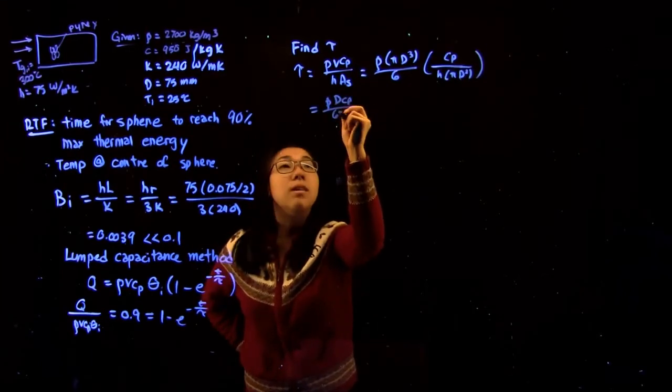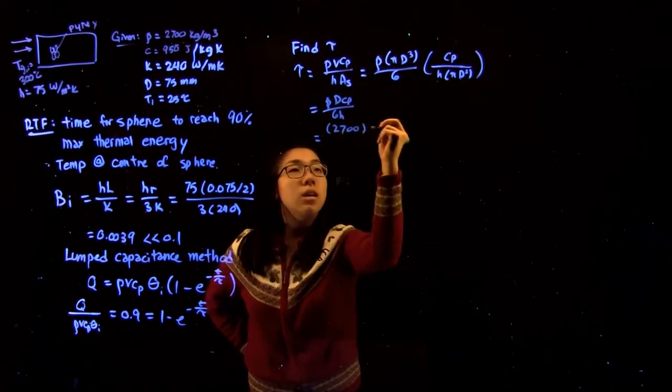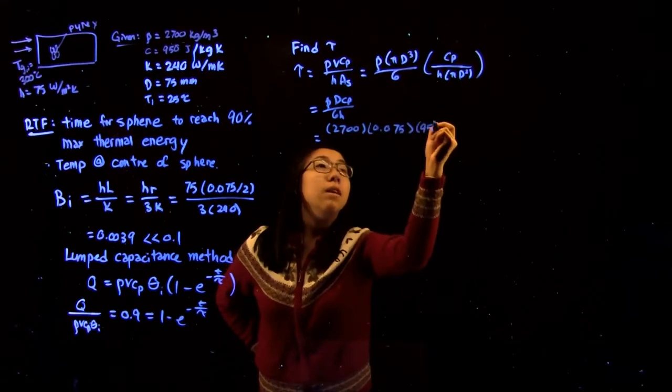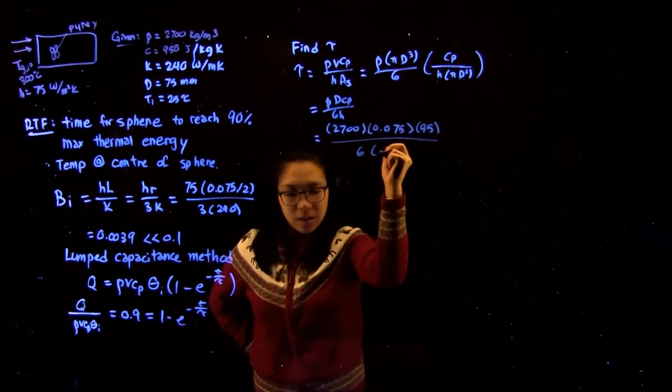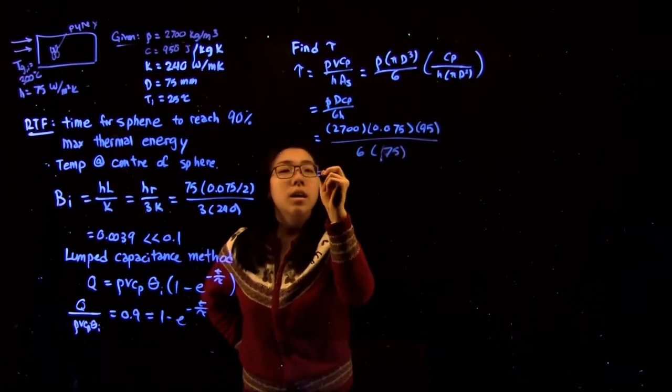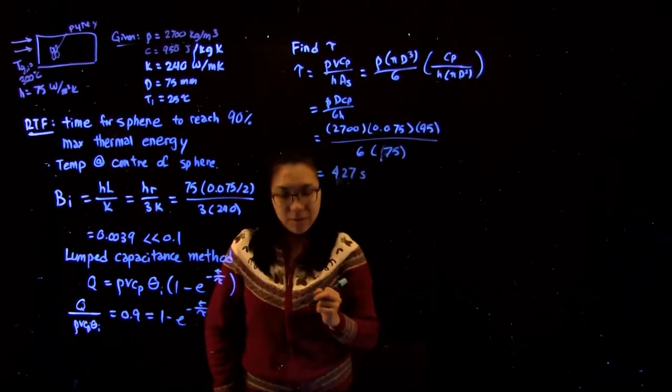If we substitute in our values, we get 2700 times 0.075 times 950 over 6 times 75, which gives a time constant of 427 seconds.